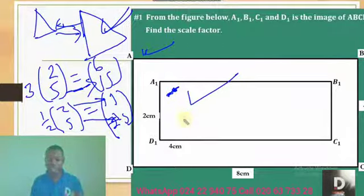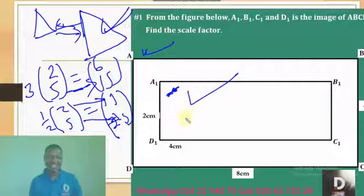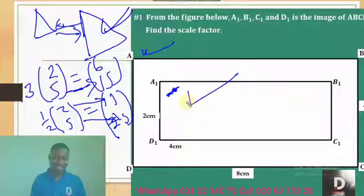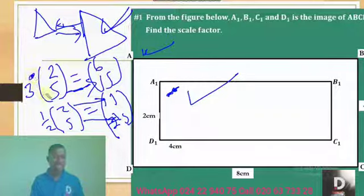So though we are talking about enlargement, there are two types of enlargement: increased enlargement and a reduction enlargement. It happens by looking at what is the scale factor. If the scale factor is greater than 1, you get an increased enlargement. But if the scale factor is less than 1, you get a reduction enlargement or a decreased enlargement.